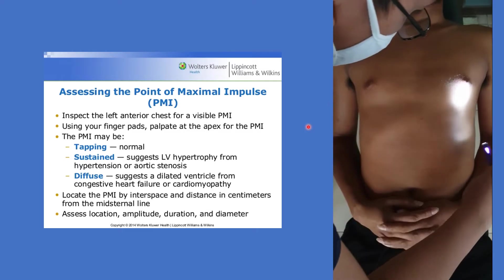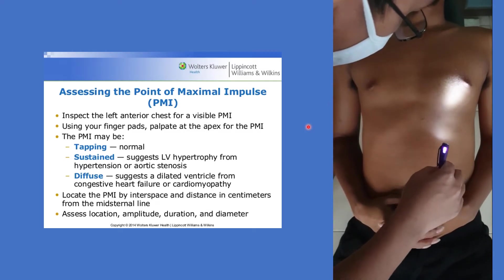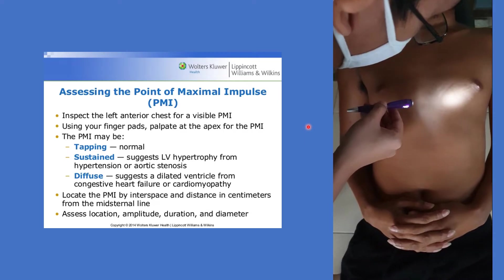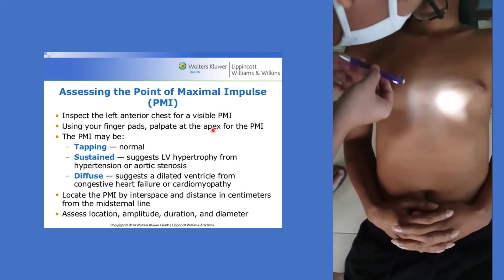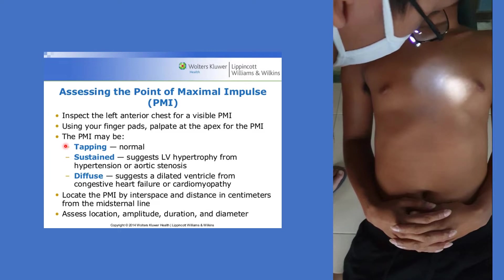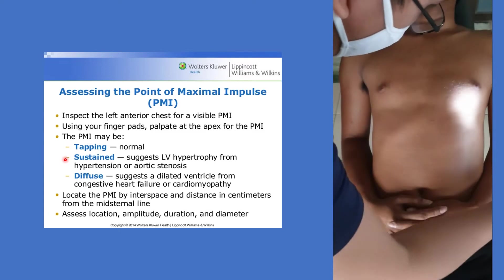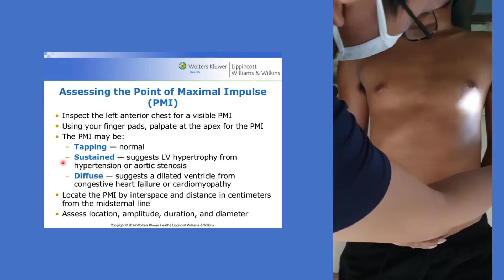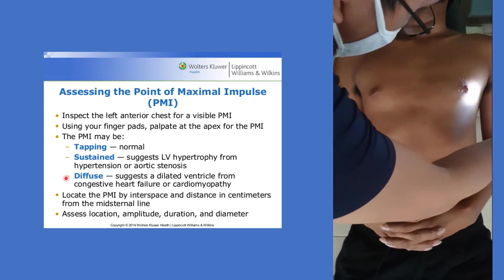When you have already identified the point of maximal impulse or PMI, characterize it — whether it is tapping, whether it is sustained (which suggests left ventricular hypertrophy), or whether it is diffuse.